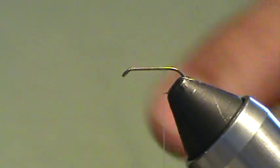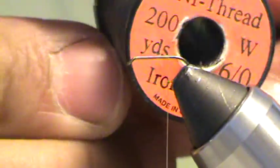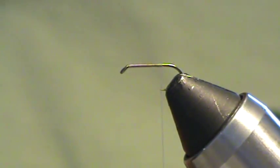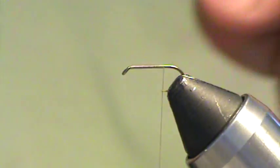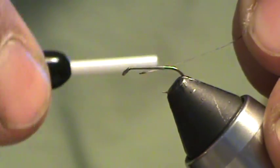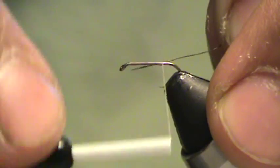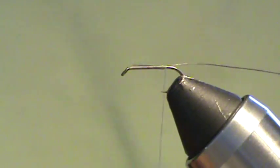Next thing I'm going to do is grab a little bit of iron gray Uni thread, this is a size 6-aught. This is going to be my ribbing. You don't have to do ribbing on this fly, but where the body's going to be pheasant tail, I'd like to reinforce it. I'm going to keep it light - instead of using wire, I'm going to use thread. Catch that on.